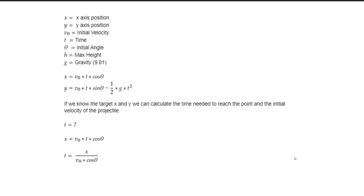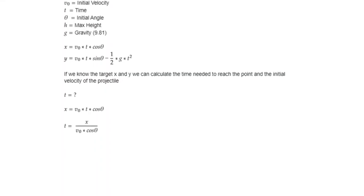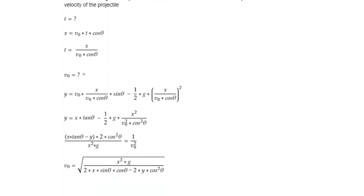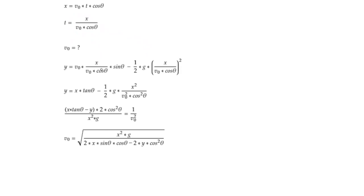Now we go back to the math. If we know the target position — that is the x and the y values — we can calculate the time it will take to reach the set point using the x formula. And we can also calculate the initial velocity using the y formula. Here are the steps used to derive the formula for the initial velocity using the y formula. First, in our y formula, we replace all instances of t with our formula to calculate t. Now shifting the variables around, we get to the formula used for the initial velocity.